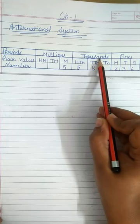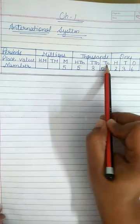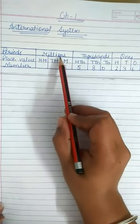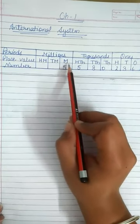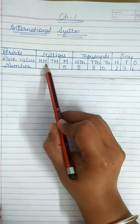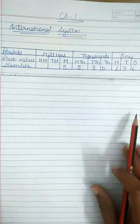Thousand periods have three places that is thousand, ten thousand, hundred thousand. Again millions periods have also three places that is million, ten million and hundred million. Let us take an example.